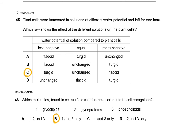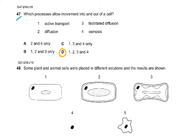Then coming to question number 45. Plant cells were immersed in solutions of different water potentials and left for one hour. Which row shows the effect of the different solutions on the plant cells? Less negative, equal, more negative. Well, if it was equal, then I would have focused on these two. And then, more negative would mean that the cell inside was minus 5 and it was minus 10. So, water would move out and they would become flaccid. So, this is how you have to give yourself examples of this and then do this question. Question 46. Which molecules found in cell membranes contribute to cell recognition? It's 1 and 2. Glycolipids and glycoproteins. The phospholipids do not do anything in cell recognition. Question 47. Which processes allow movement into and out of a cell? Well, of course, all the four processes will allow movements into and out of the cell. So, the answer was D.